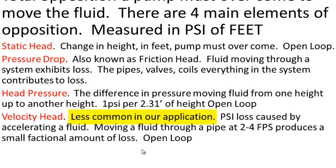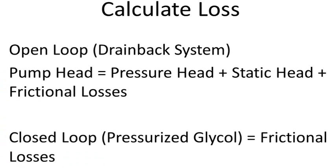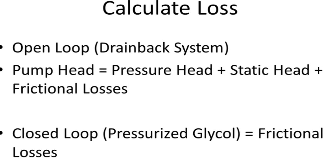Velocity head is a less common problem in our applications. Generally, in order to accelerate a fluid from stop to a certain feet per second, we lose PSI. A pump will only produce a flow — we overcome a pressure, otherwise known as pump head, in order to get that fluid to go. To calculate loss, this is simply the calculable head loss required to size the pump. We are not at this point calculating the system pressure — this is only the losses within the system to calculate for the pump. In a closed loop system, we only care about the frictional losses. In an open loop, you have all four ingredients, with the first three being the most important and velocity being ignored most of the time.